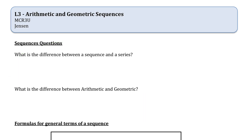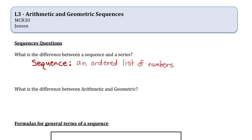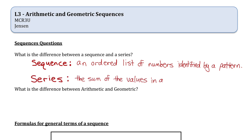What is the difference between a sequence and a series? A sequence is an ordered list of numbers identified by a pattern, and a series is just the sum of the values in a sequence. So far in this unit, we've looked at two different types of sequences: an arithmetic sequence and a geometric sequence.